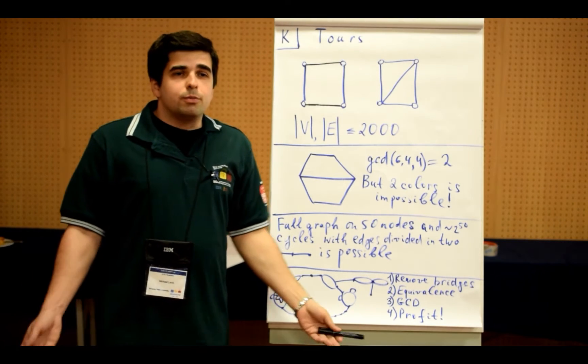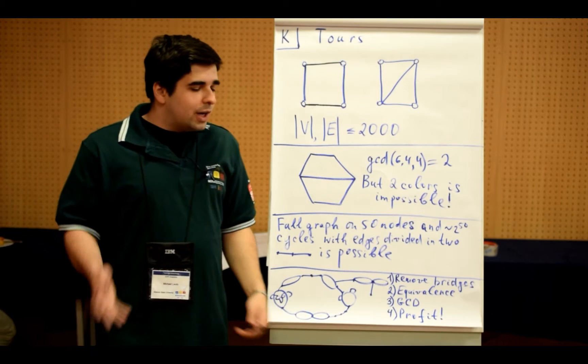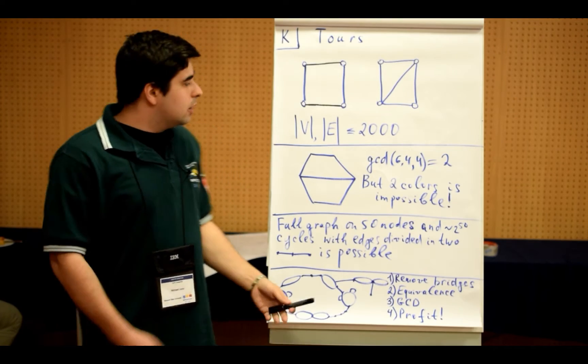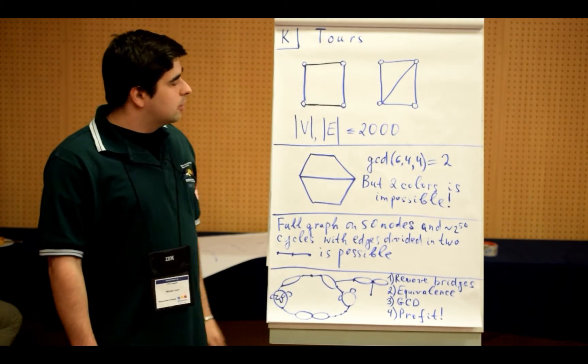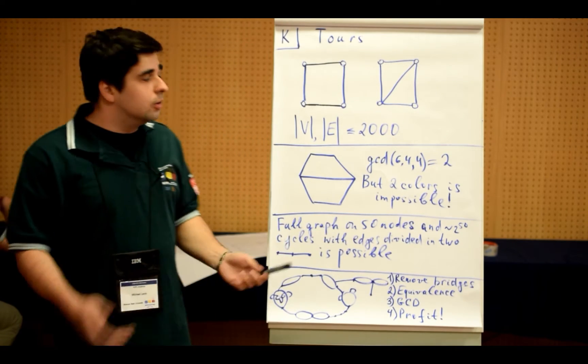So how to solve this problem? The first thing that comes to mind is that we should somehow find the greatest common divisor of all lengths of cycles. And then, all numbers that are possible number of colors should divide it and find all divisors and that's all.